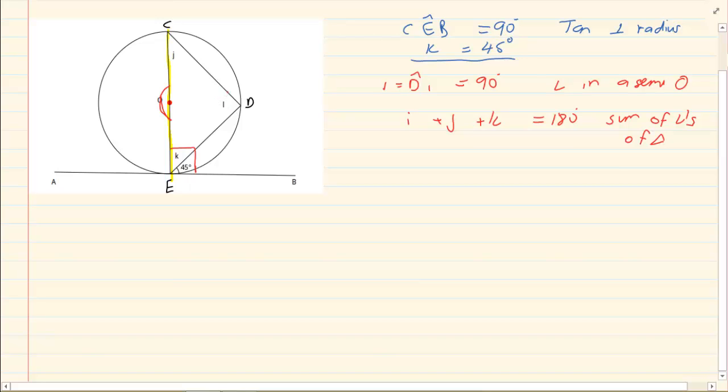Now we have that I is 90 degrees. We have that K is 45 degrees. That would mean that J is going to equal to 45 degrees. Sum of angles of a triangle.